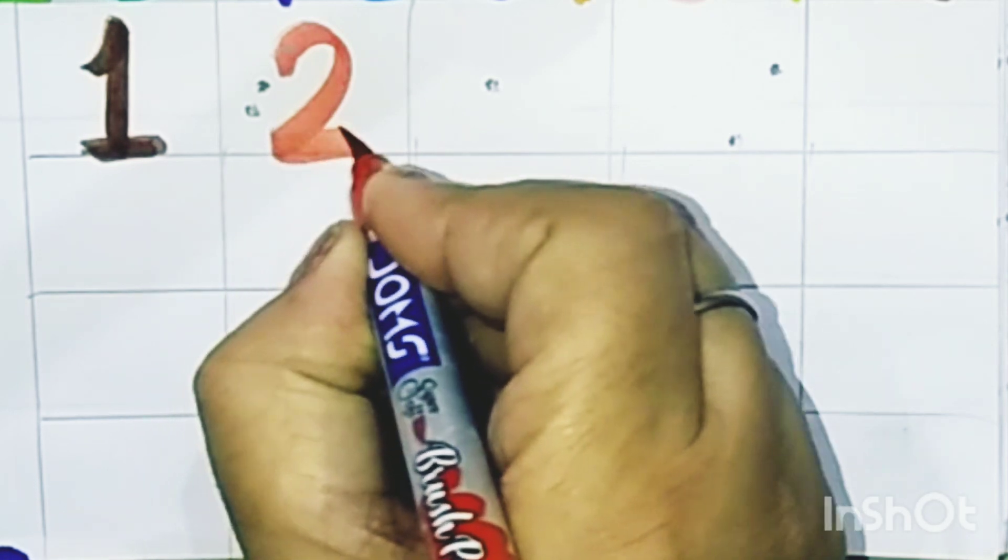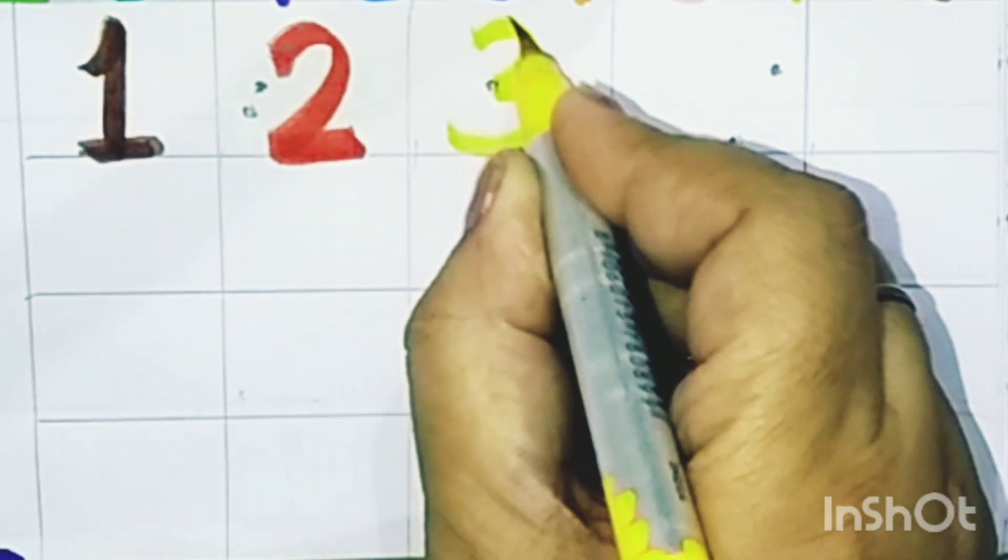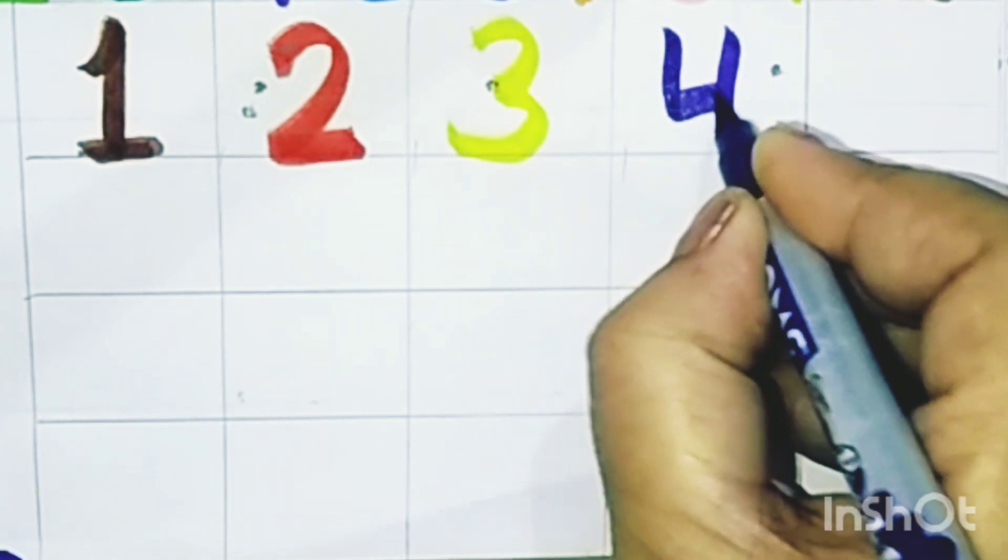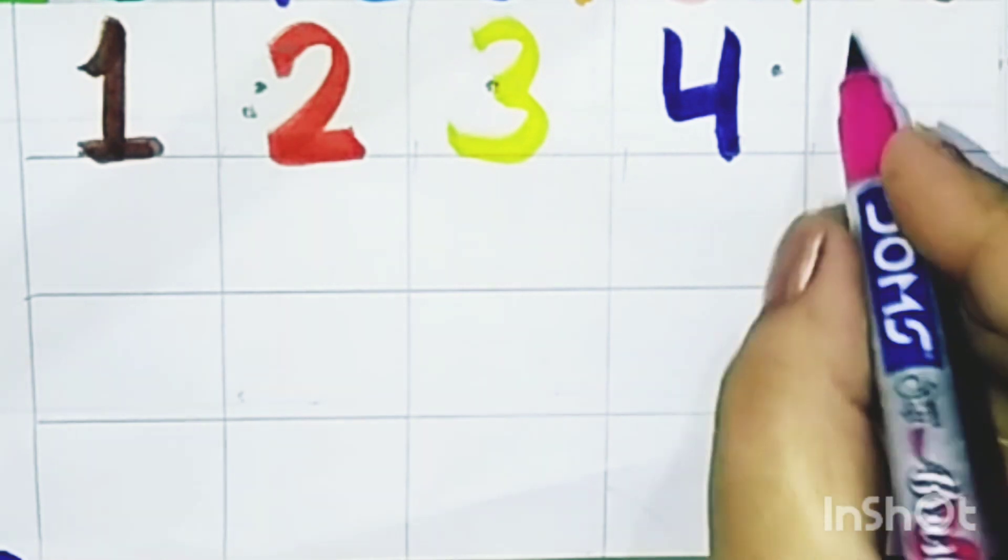Let us start. One one, two two, three three, four four, five.